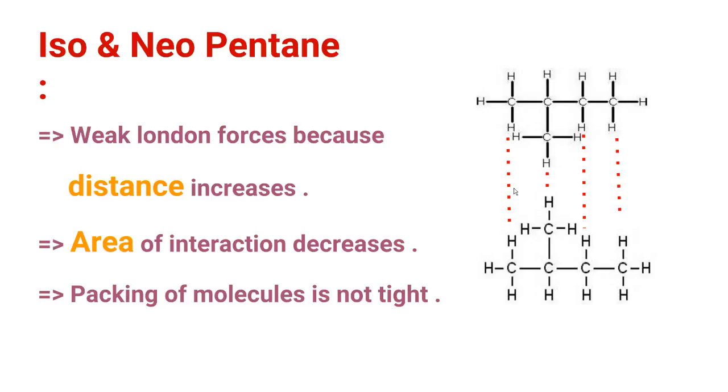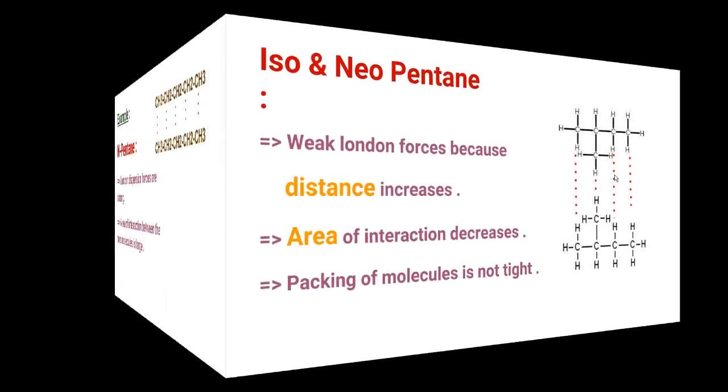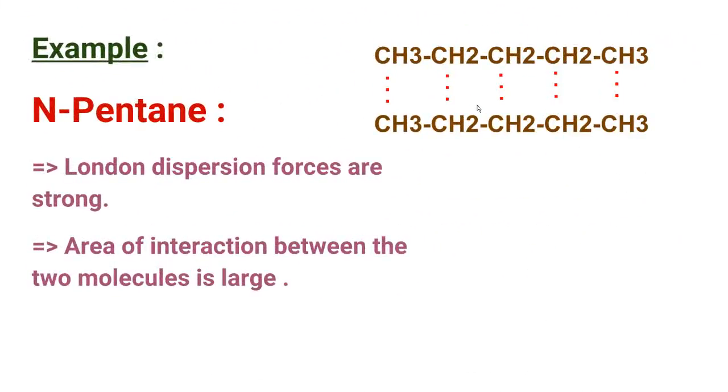Now, the London dispersion forces here are operating at four different places, you can see here. But in this case, the London dispersion forces are operating at five different places. So the area of interaction between these two molecules is very large in case of normal pentane.